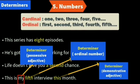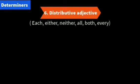You should be able to identify which are the determiners used in a certain sentence. Sixth, we have the distributive adjectives. Which are they? Each, either, neither, all, both, every.